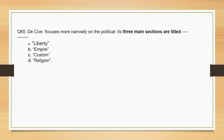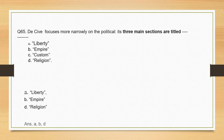De Cive focuses more narrowly on the political. Its three main sections are titled: liberty, empire, then religion. The correct sequence of this question is A, B, D.